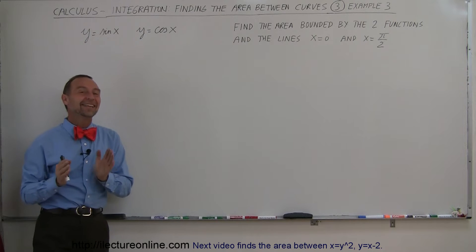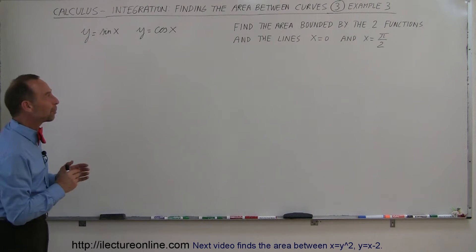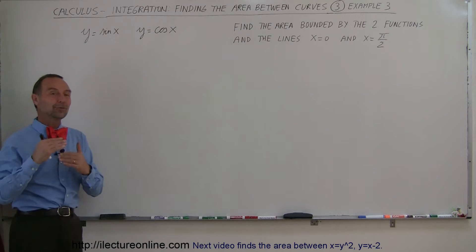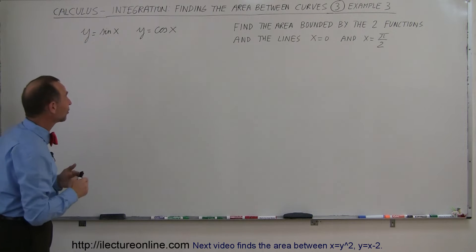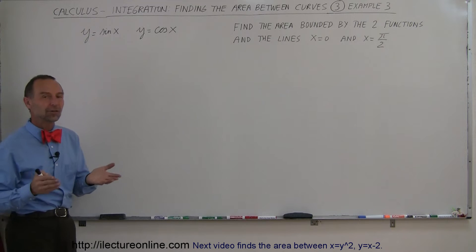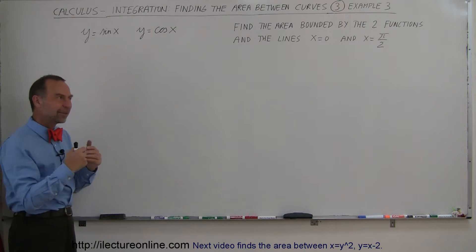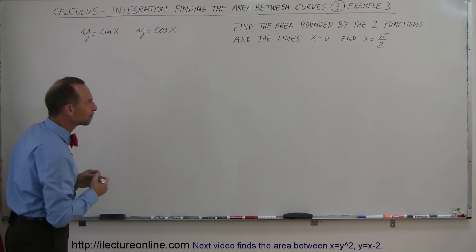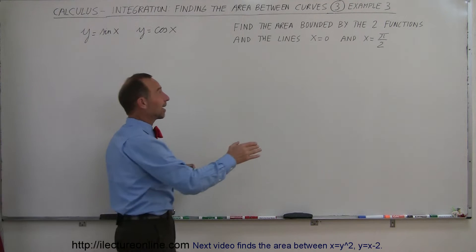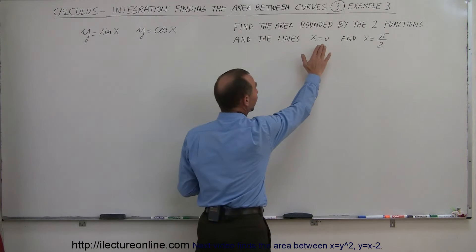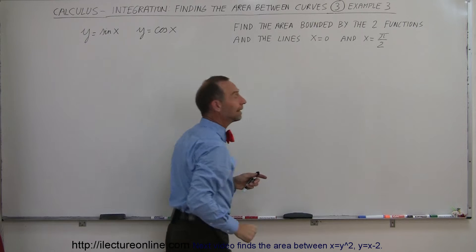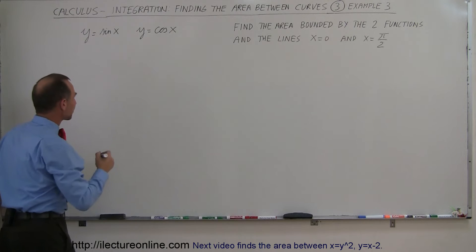Welcome to Electron Line. In this next example we're going to find the area between those two very familiar functions, the sine of x and the cosine of x. On the left and right side, it'll be bounded by the line x equals 0 and the line x equals pi over 2.